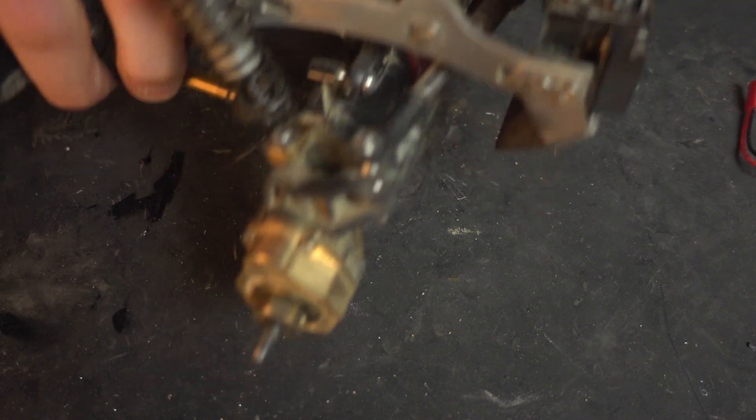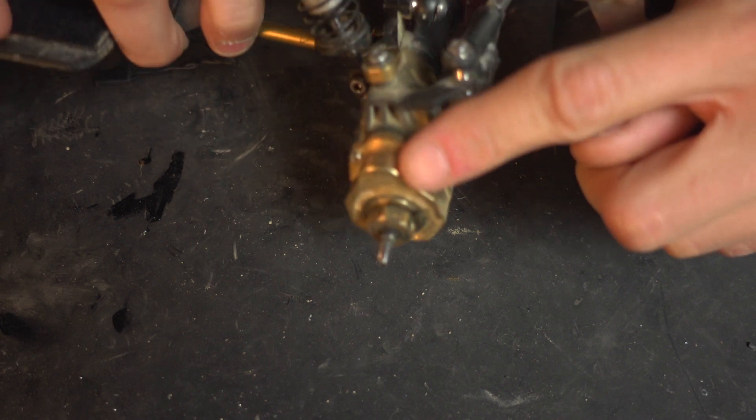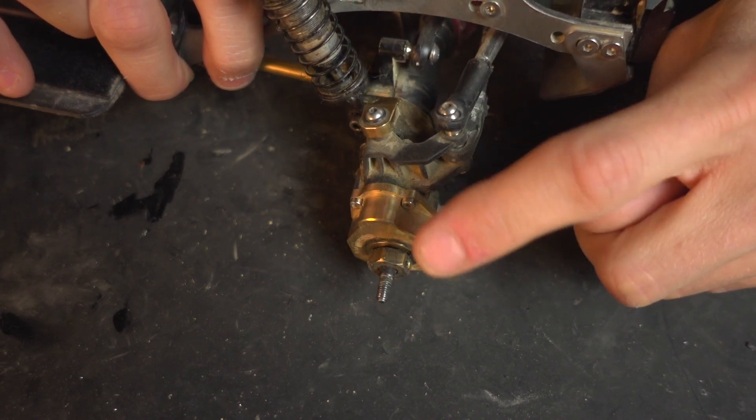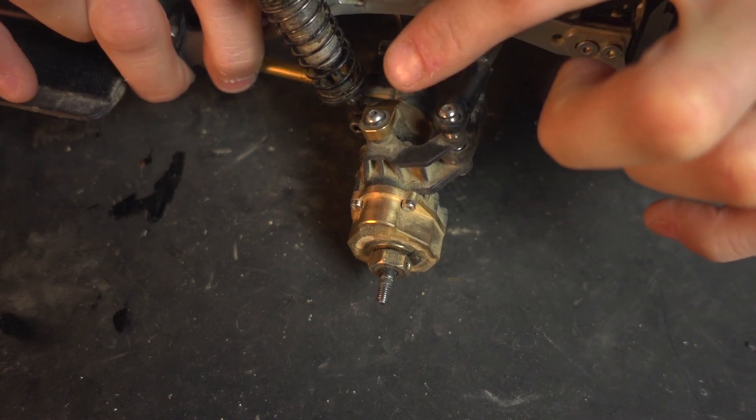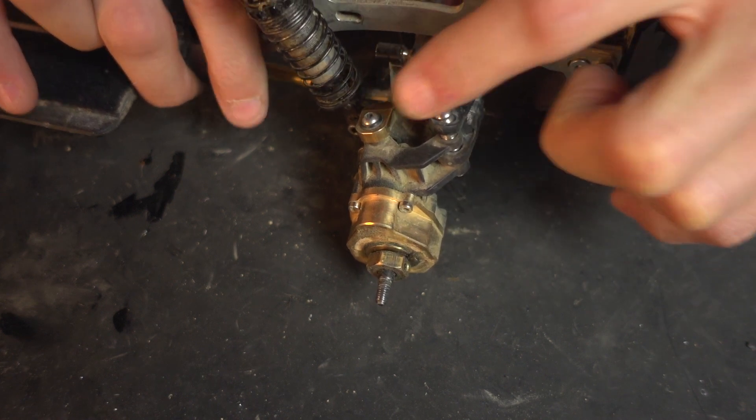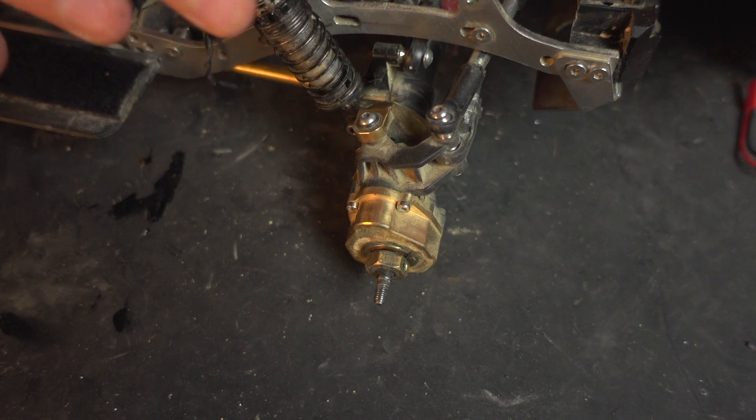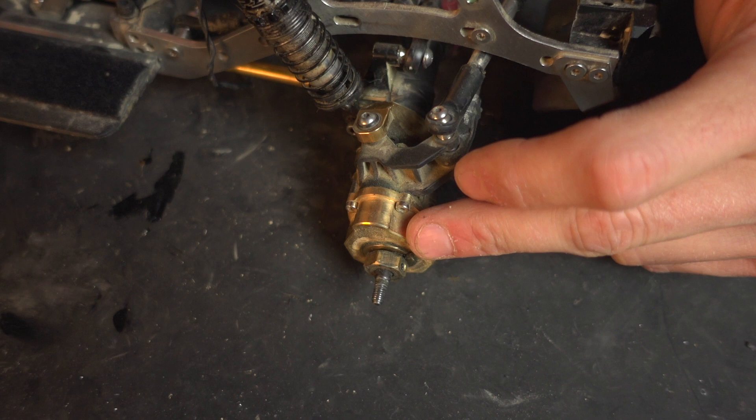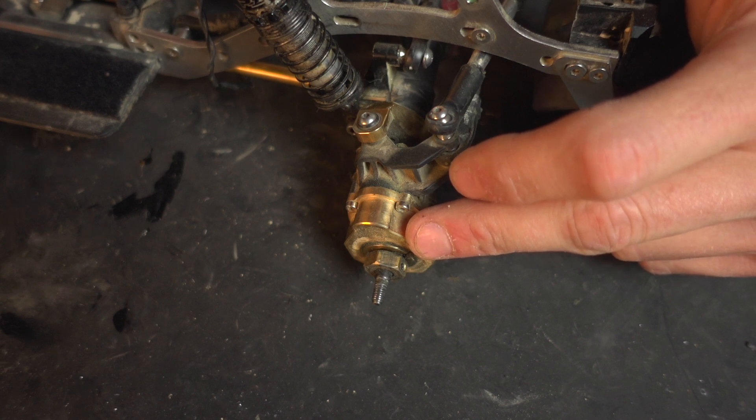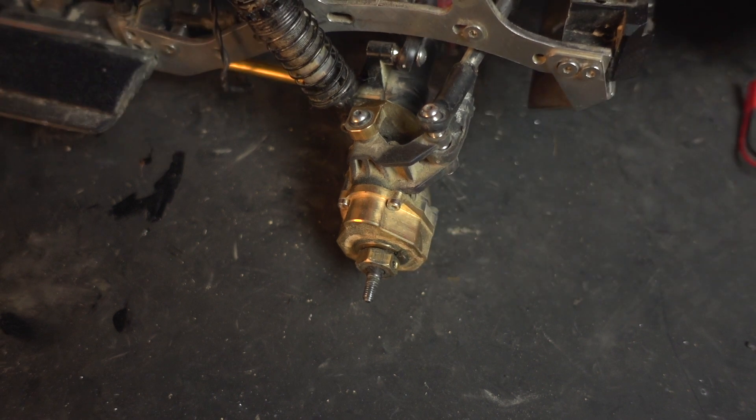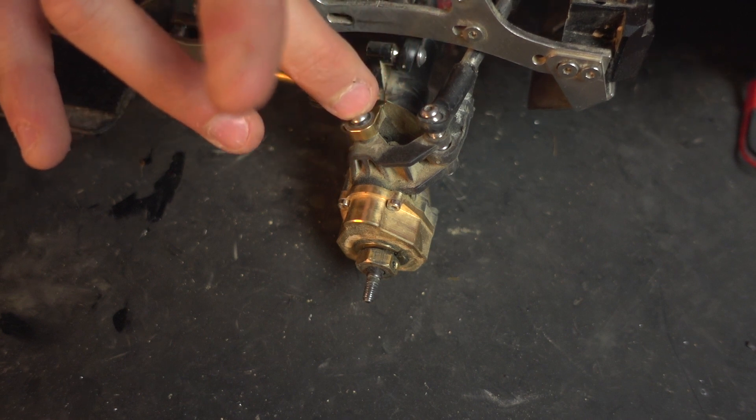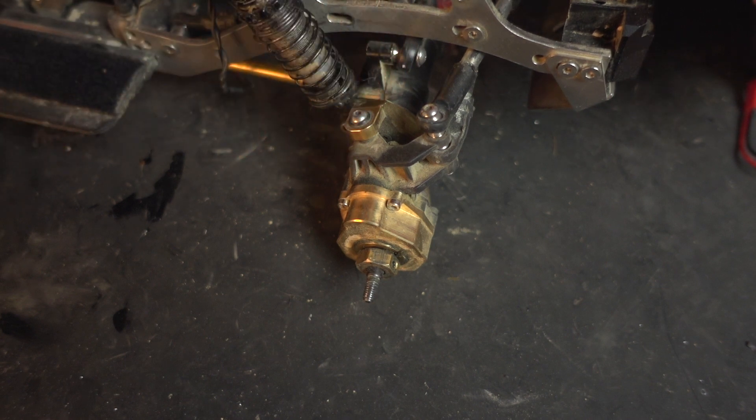But on this crawler there's something else to counterbalance the motor. You'll notice that I have brass portal covers and brass C hubs. Now I've got some aluminium C hubs coming so I might leave those brass ones on for now, but I should be able to remove these portal covers which will take another 80 grams off I think.